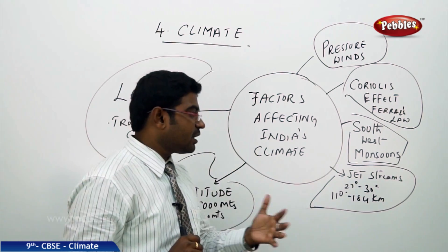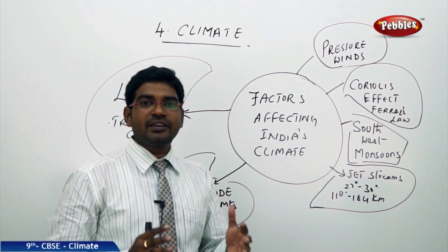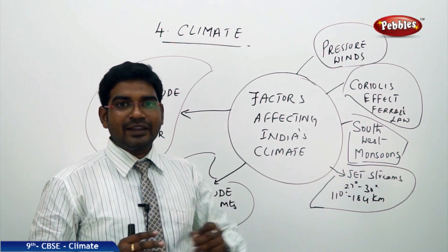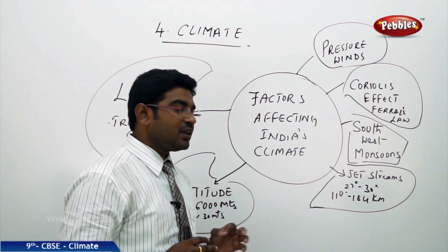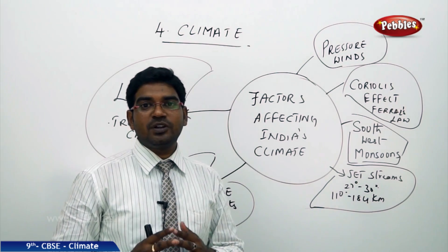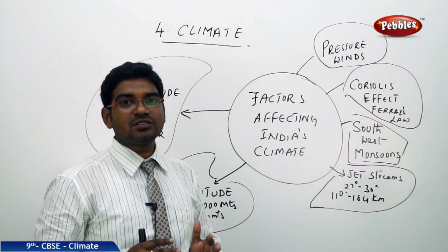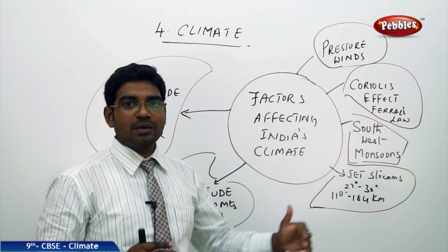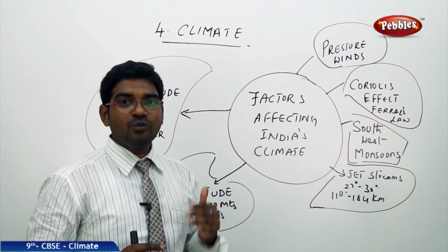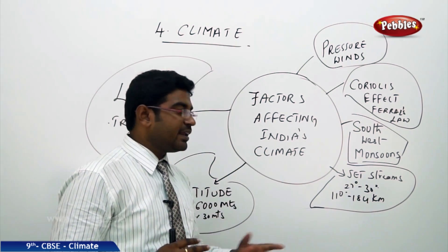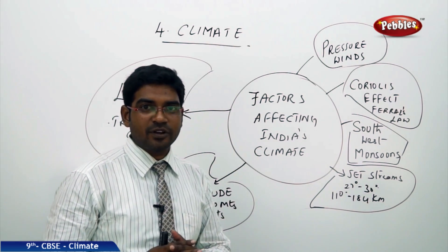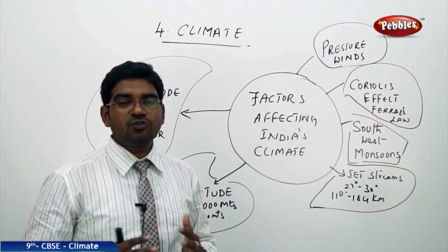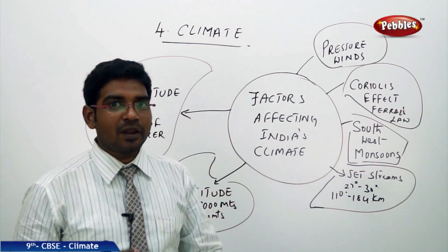These jet streams generally occur at latitudes of around 27 to 30 degrees, where they travel at a speed of around 110 kilometers per hour in summer, while in winter it goes up to 184 kilometers per hour. That is how jet streams also influence the climate of any particular place.